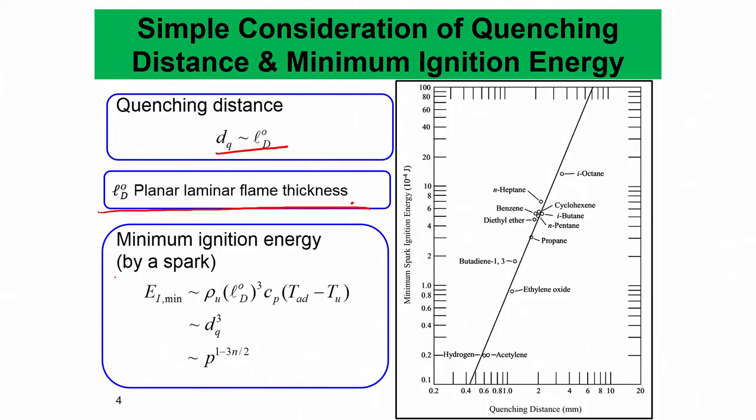That is the concept of the quenching distance: for a premix flame to not be quenched while passing through two parallel plates, the distance between them must be greater than the quenching distance. The quenching distance depends on the flame thickness, because the flame thickness is the region over which the conduction process is dominant. Therefore D_Q is essentially proportional to LD₀, which is the planar laminar flame thickness.